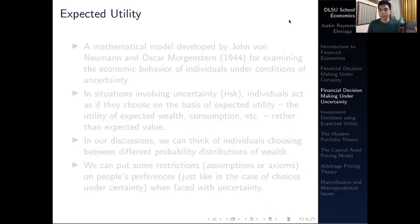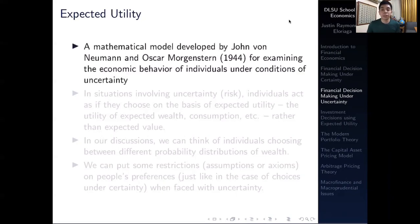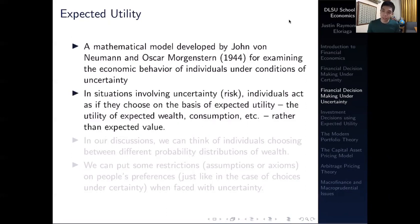There was room for improvement, and one of the things Bernoulli posited was this concept called expected utility. It was formalized by John von Neumann and Oscar Morgenstern in 1944, in which they created a mathematical model for examining the economic behavior of individuals especially under conditions of uncertainty. In situations involving risk, individuals act as if they choose on the basis of expected utility — the higher the expected utility of wealth or consumption, the higher the expected value.